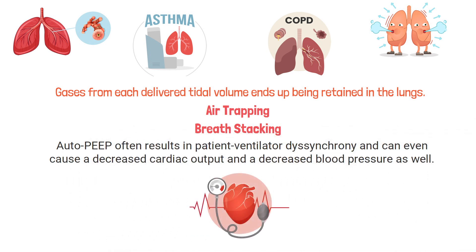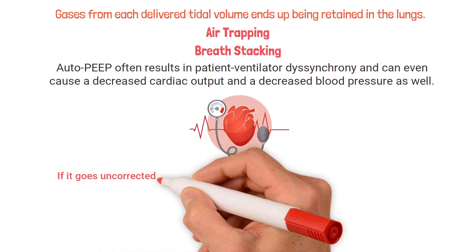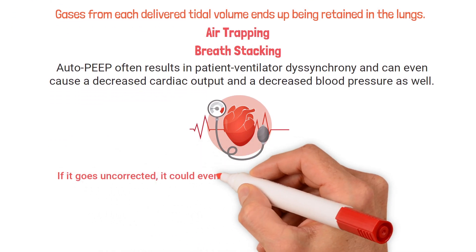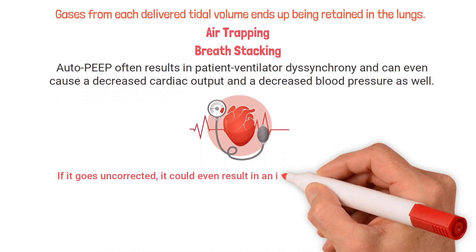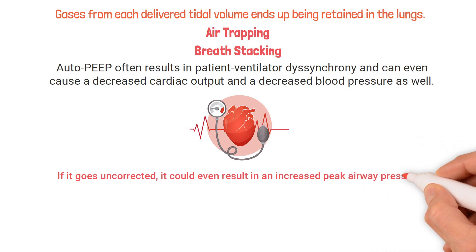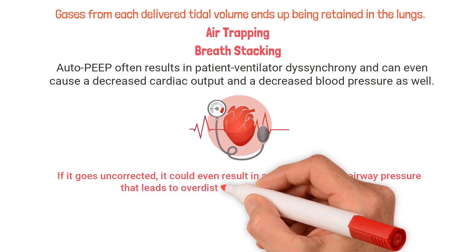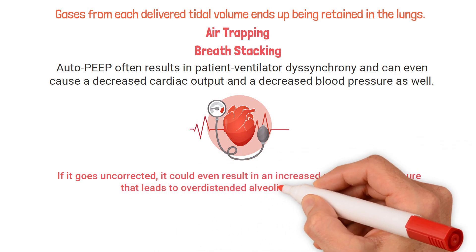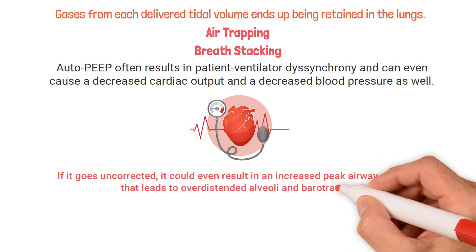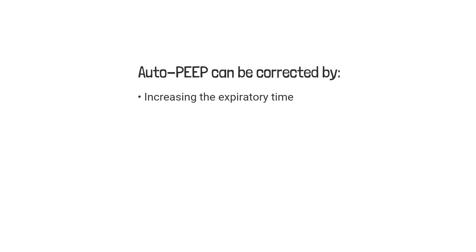Auto-PEEP often results in patient-ventilator dyssynchrony and can even cause a decreased cardiac output and decreased blood pressure. If it goes uncorrected, it could result in an increased peak airway pressure that leads to over-distended alveoli and barotrauma.